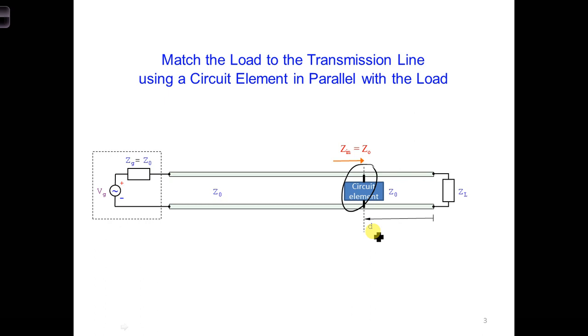Our goal is to add a circuit element such that the transmission line load in combination, so ZL in combination with the circuit element, creates a matched condition so that ZN, which is the combination of the circuit element and ZL, would equal Z naught.